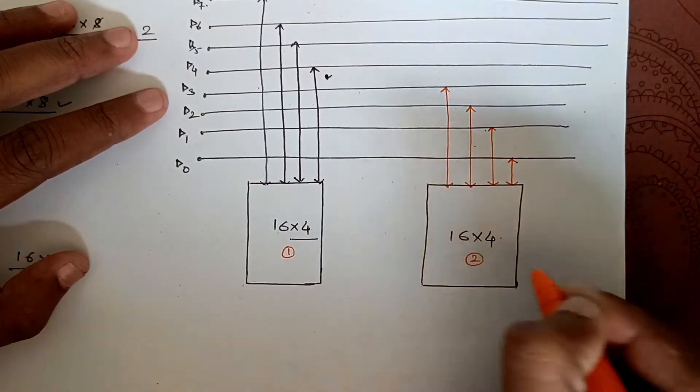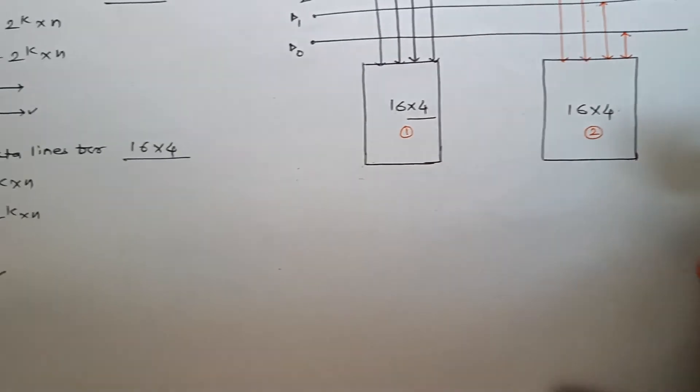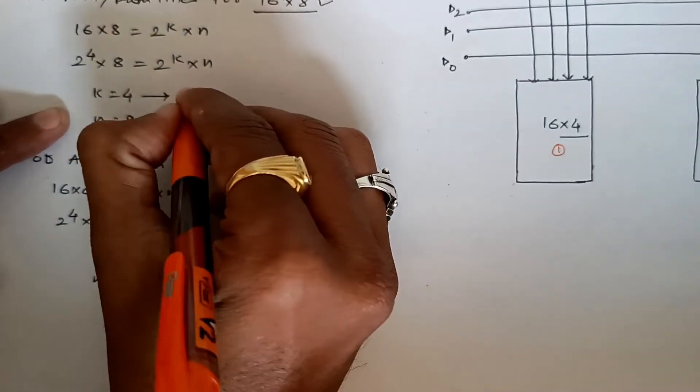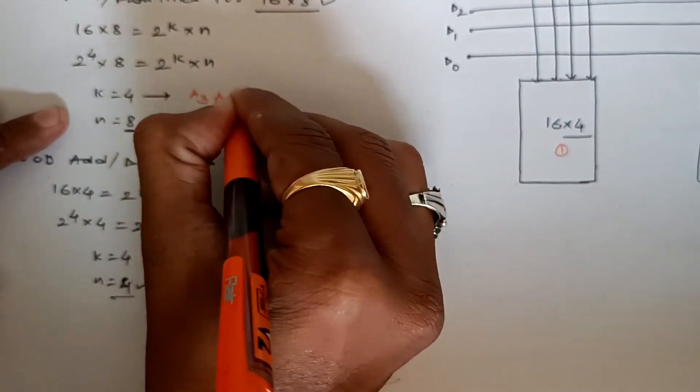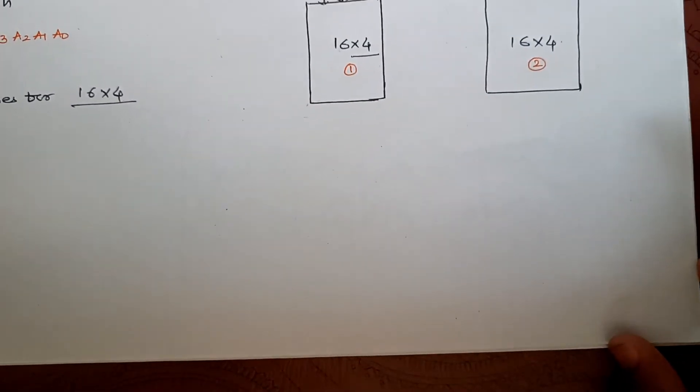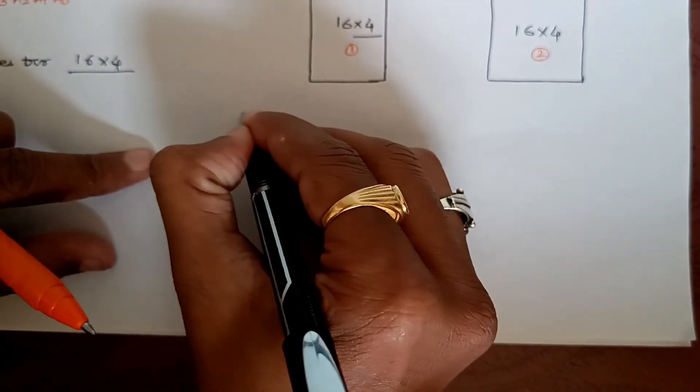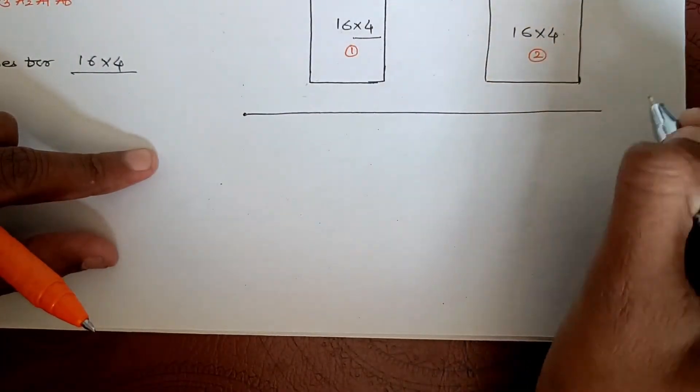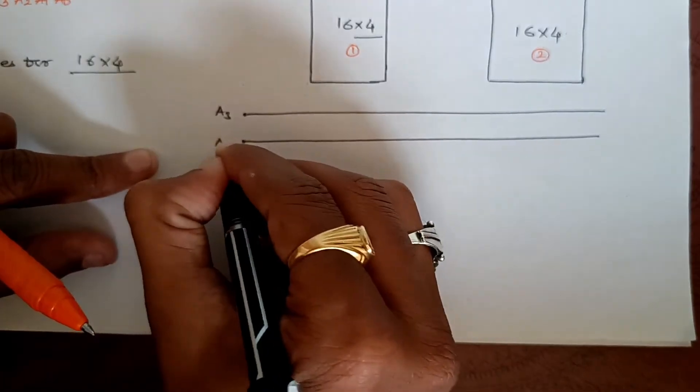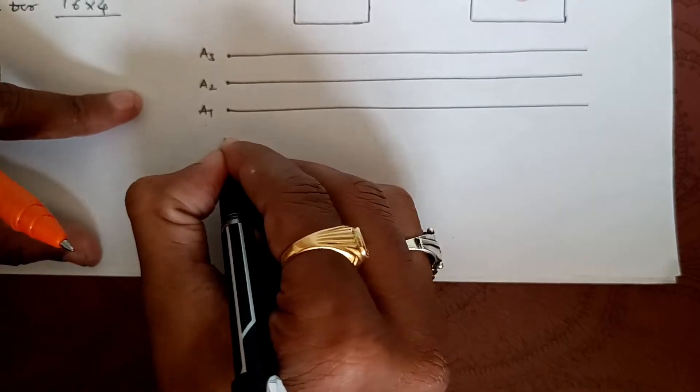So we have connected 4 data lines for IC number 1 and 4 data lines for the second IC. Now let's go for address lines. For both ICs we need 4 address lines: a3, a2, a1, a0. So let's connect the four address lines to each of the ICs. This is our address a3, this one is a2, this one is a1, and this one is a0.